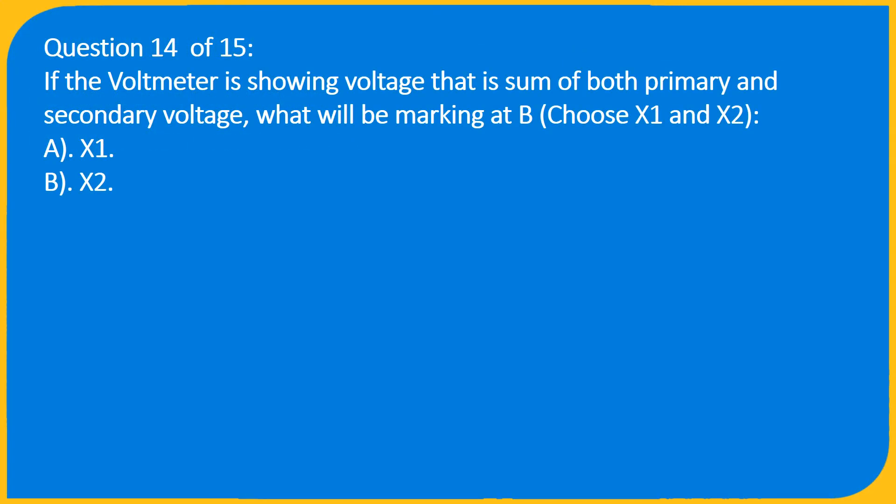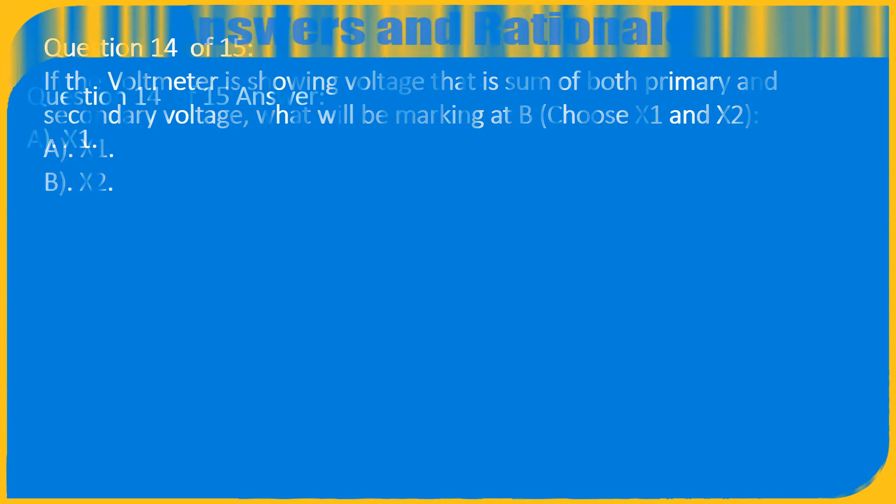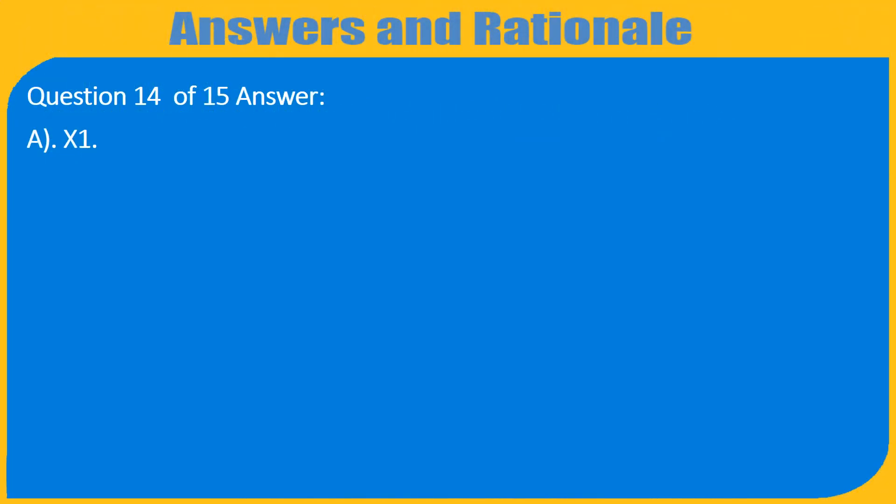Question 14 of 15: If the voltmeter is showing a voltage that is the sum of both primary and secondary voltages, what will be the marking at B? Choose X1 or X2. A. X1. B. X2. Answer: A. X1.